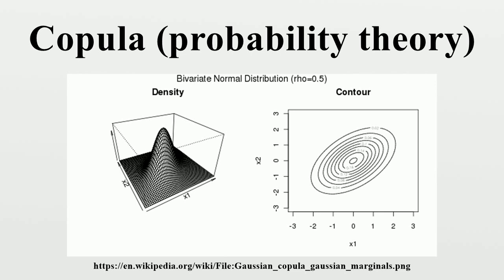Mathematical definition: Consider a random vector. Suppose its margins are continuous, i.e., the marginal CDFs are continuous functions. By applying the probability integral transform to each component, the random vector has uniformly distributed marginals. The copula is defined as the joint cumulative distribution function of this transformed vector.